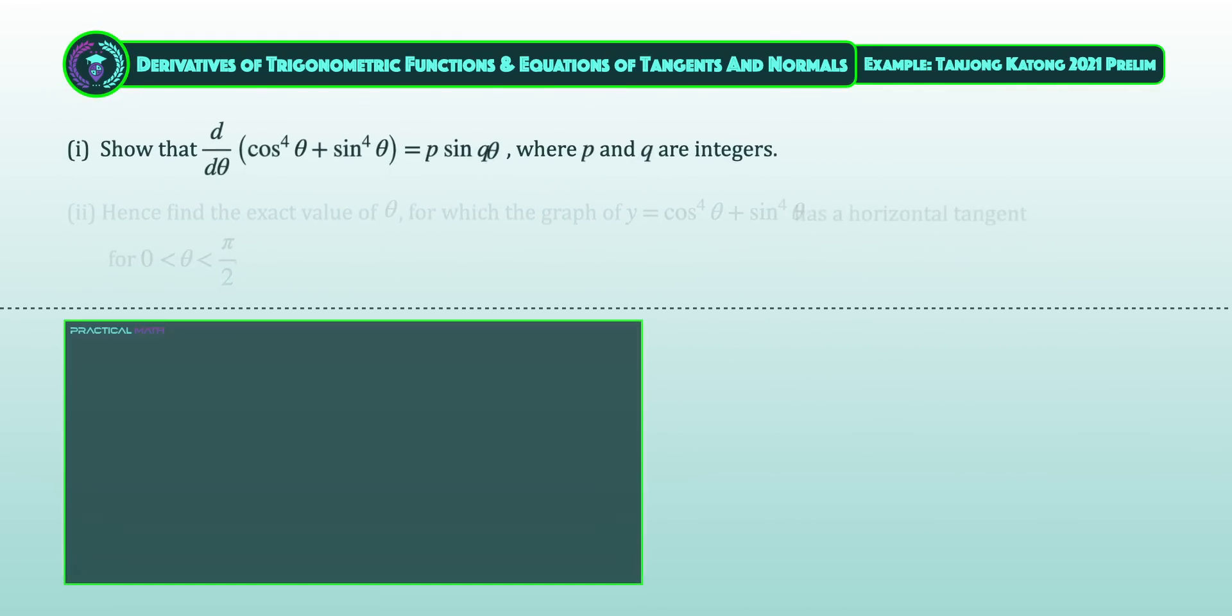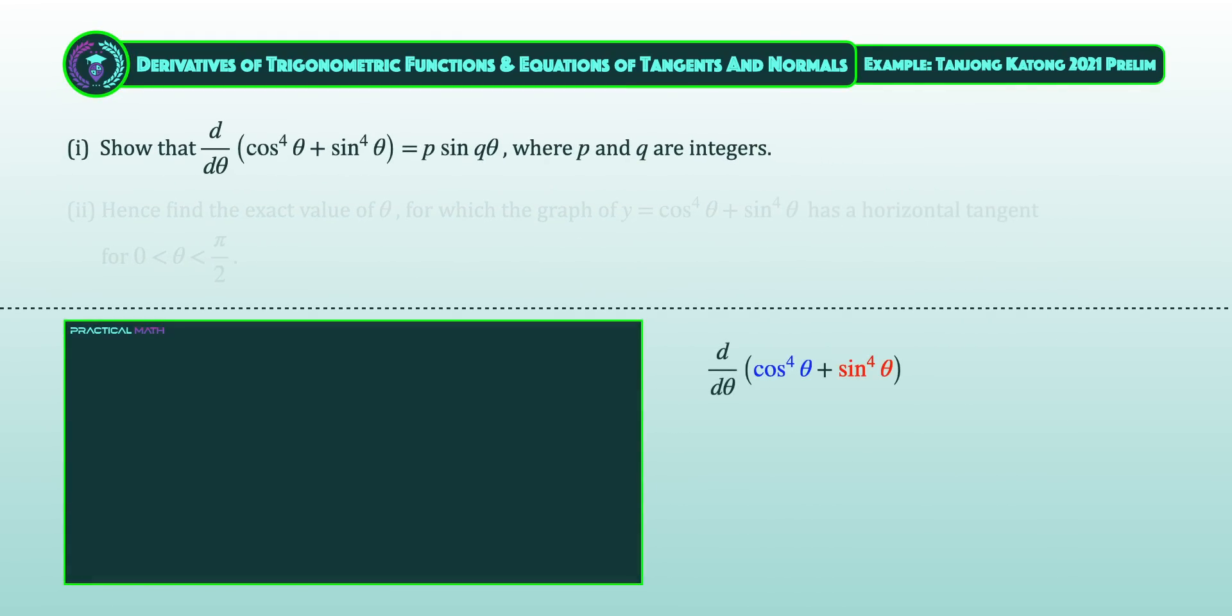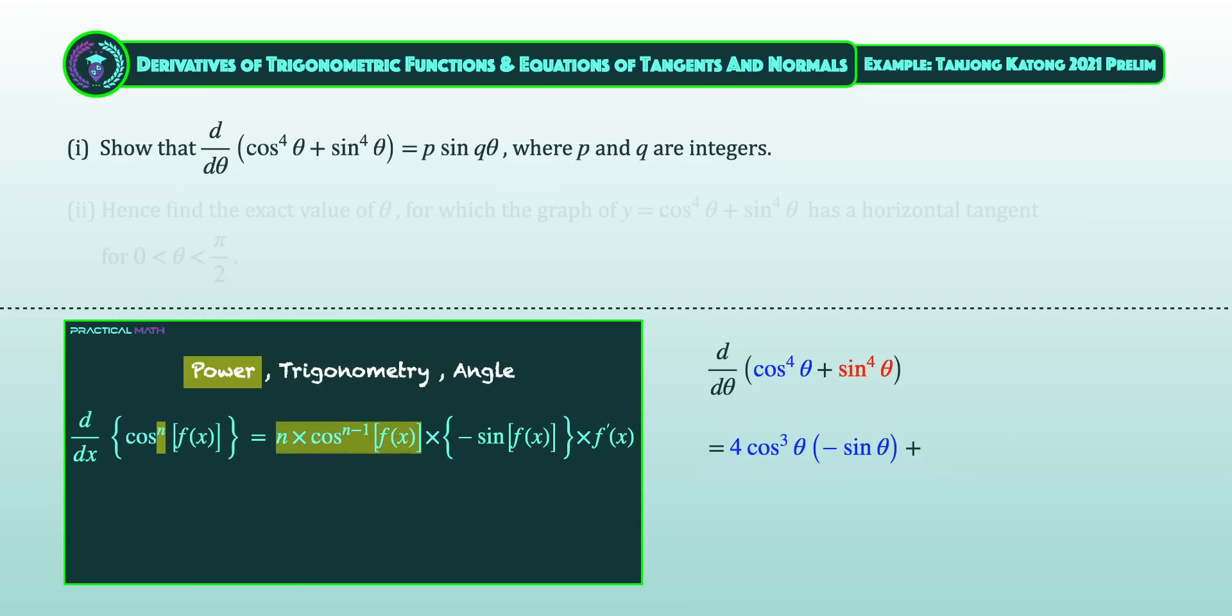To differentiate cos^4θ + sin^4θ, we'll need the formula for the derivative of the cosine function. We'll start the differentiation by bringing down the power to be a product and the original power will minus 1. So for the power of 4, we'll bring it down to be a product and the original power minus 1 will give us 3. Next, we'll differentiate the trig function of cosine, giving us a negative sine. Then we'll end it off by differentiating the angle of f(x) to give us f'(x). And in our case, differentiating θ will give a result of 1. We'll apply the same power, trig, angle technique for the derivative of sine function.